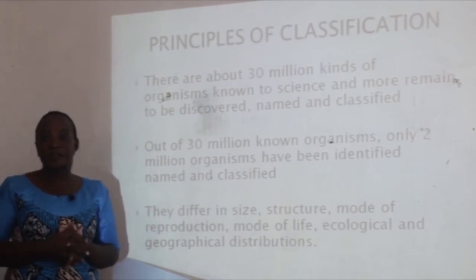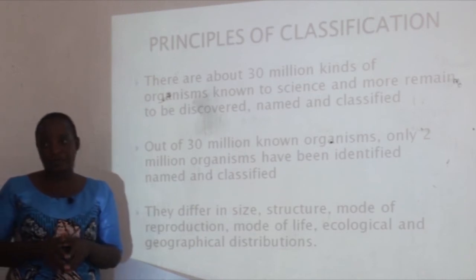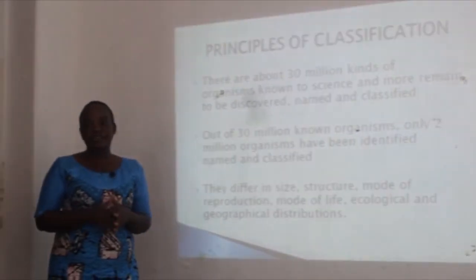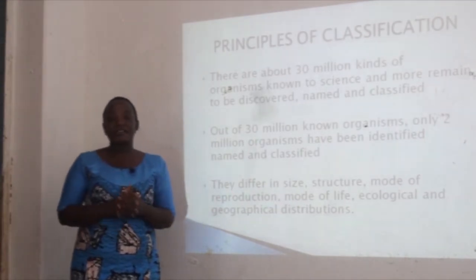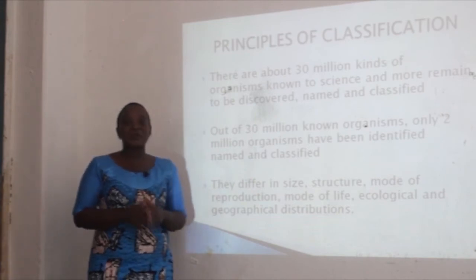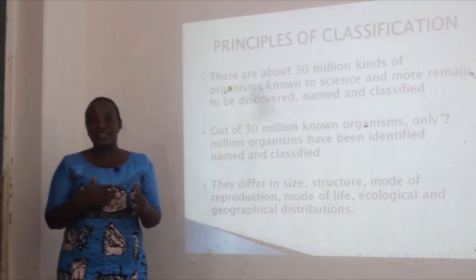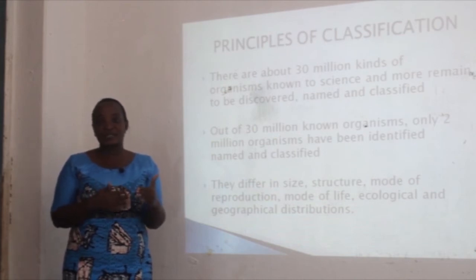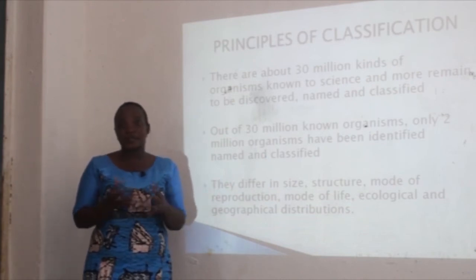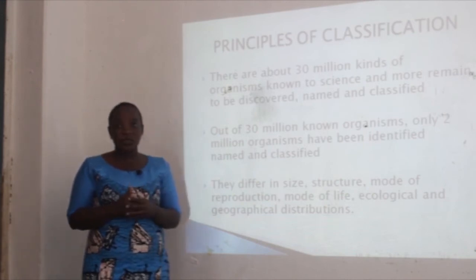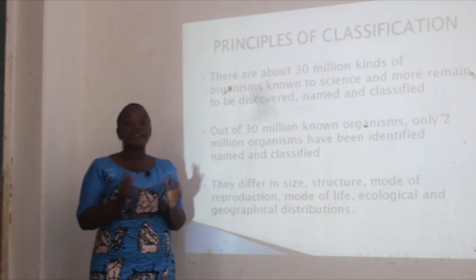We now move to the second part of this video: the principles of classification. There are about 30 million kinds of organisms known to science, and many more remain to be discovered, named and classified. Out of 30 million known organisms, only 2 million have been identified, named and classified. This calls on scientists and biologists to discover more organisms, identify, name and classify them.